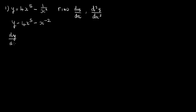So dy/dx equals 5 times 4 is 20, x, 5 minus 1 is 4, minus 2 times 1 is plus 2, x, minus 2 minus 1 is minus 3. And we can rewrite that as 20x to the power of 4 plus 2 over x cubed.